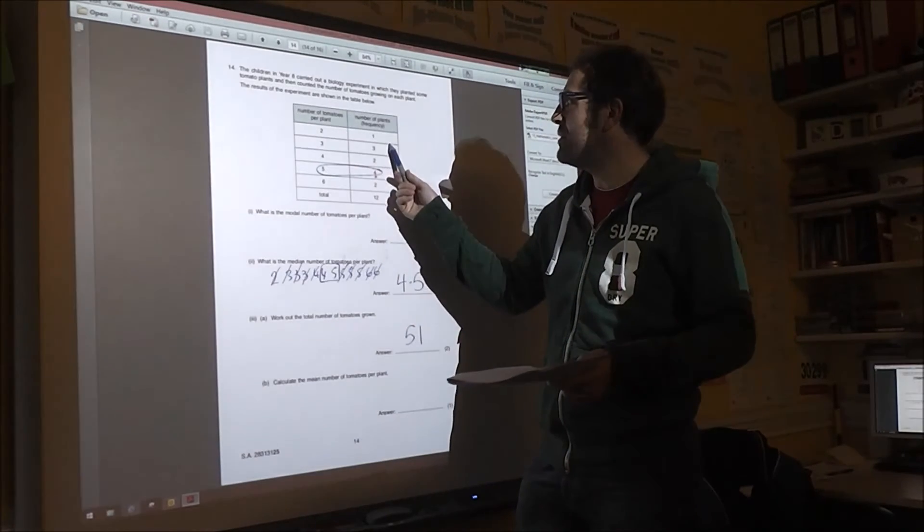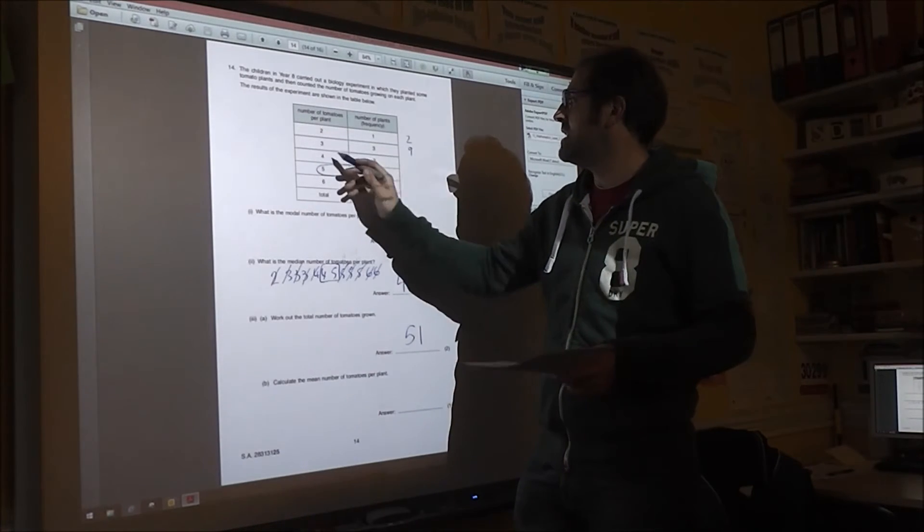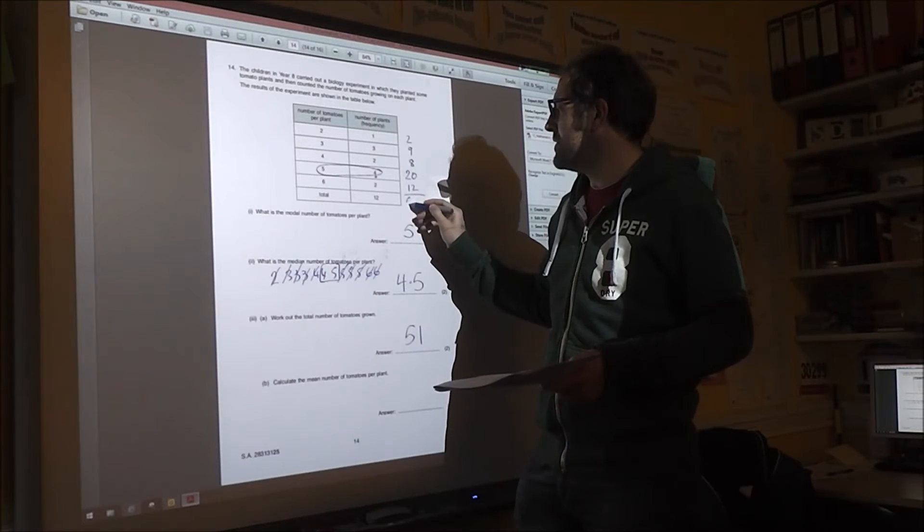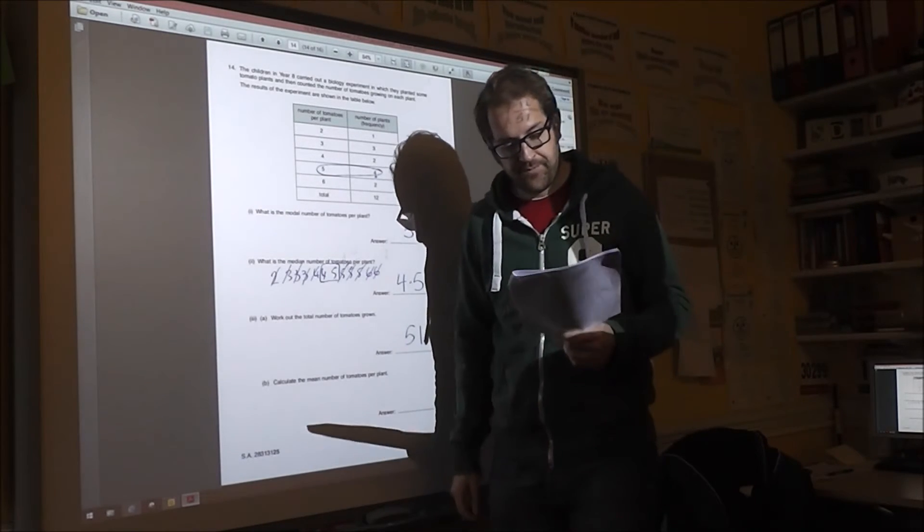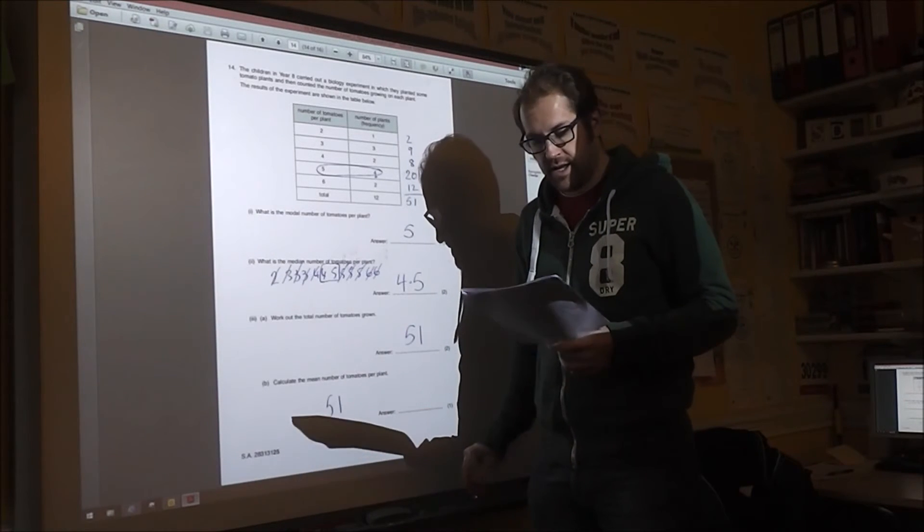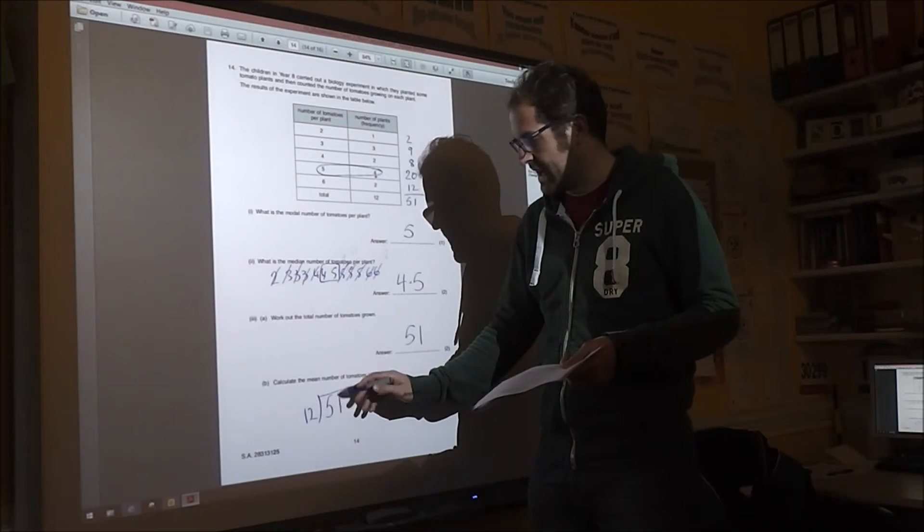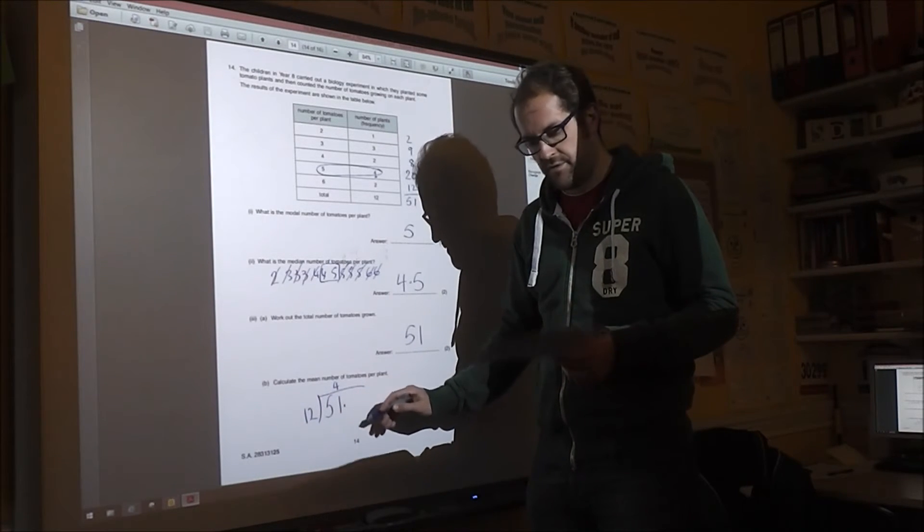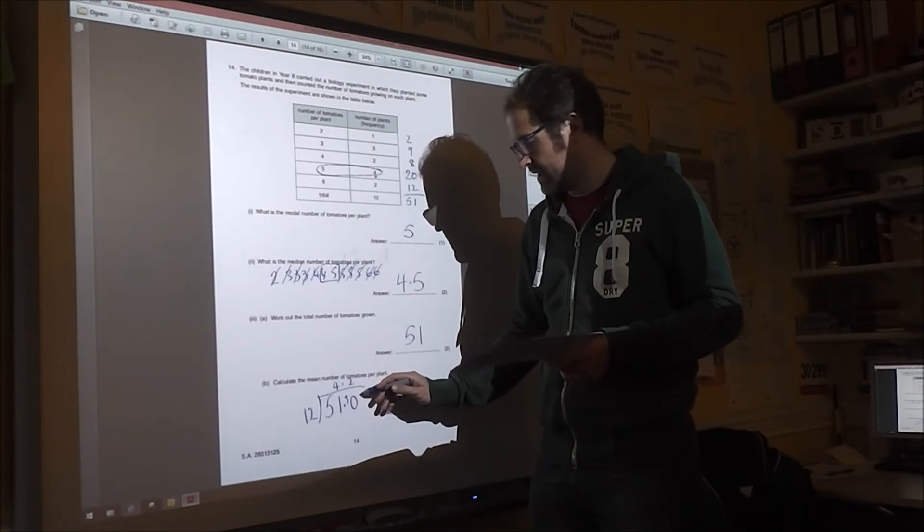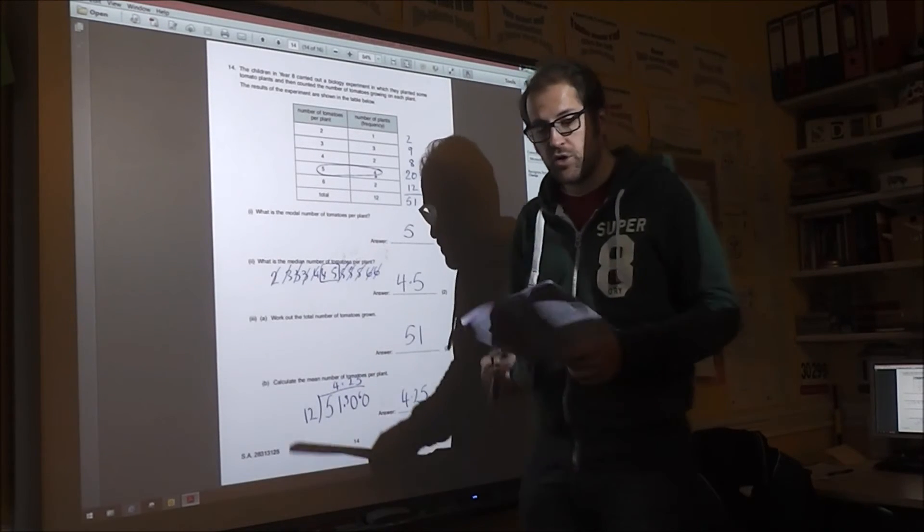This also helps you with the total number of tomatoes grown. And if you add up all these numbers, you get 51. You can also work it out from the frequency table by saying two times one is two, three times three is nine, four times two is eight, twenty, twelve. Which gives you a total of 51. And the mean number of tomatoes per plant. You've got 51 tomatoes, twelve plants. And that goes in four, remainder three, remainder two, remainder six, five. So it's 4.25 or four and a quarter.